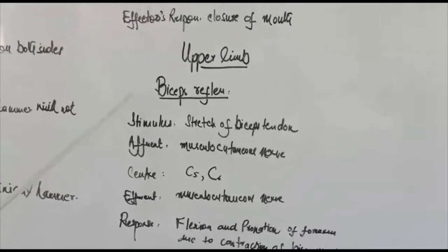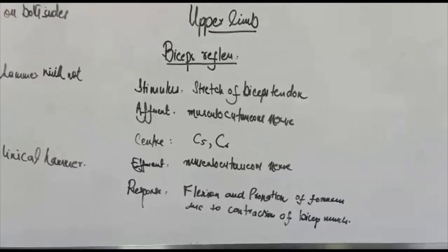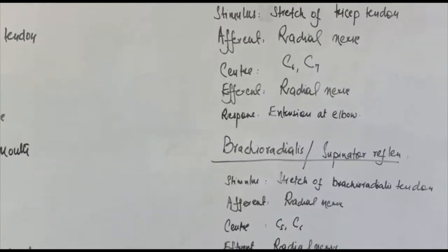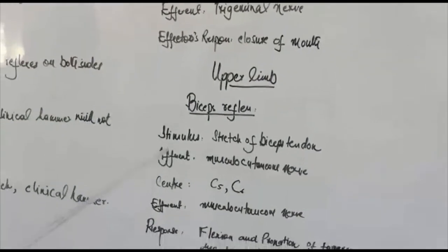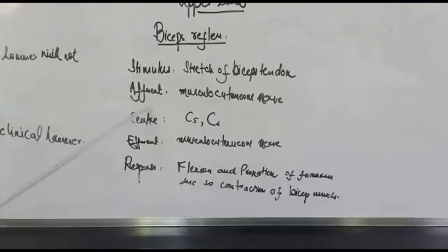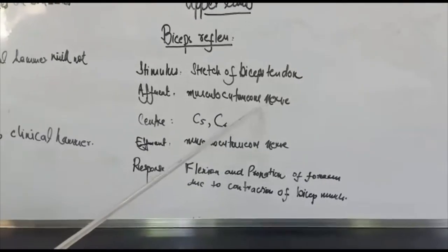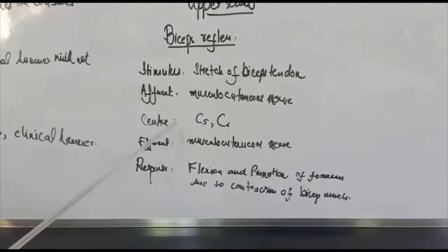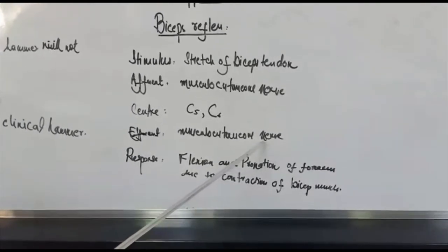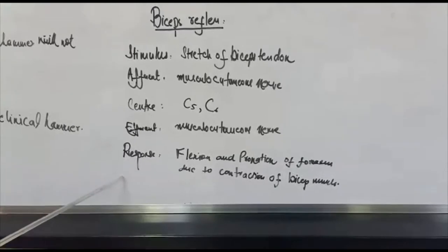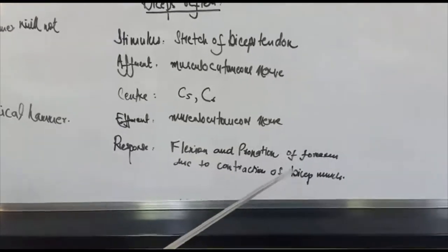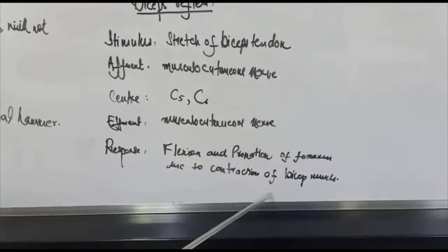In the upper limb, we check bicep reflex, tricep reflex, and brachioradialis or supinator reflex. In the bicep reflex, the stimulus is stretch of the bicep tendon, the afferent is the musculocutaneous nerve, and the center is C5 and C6. The efferent is the musculocutaneous nerve, and the response we will see is flexion and pronation of the forearm due to contraction of the bicep muscle.